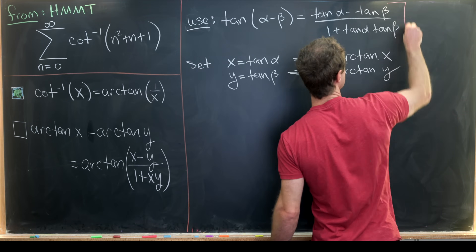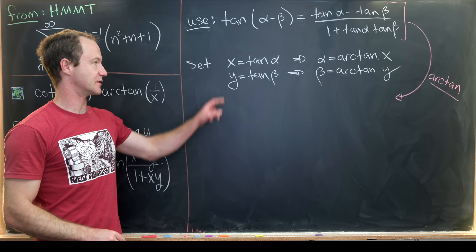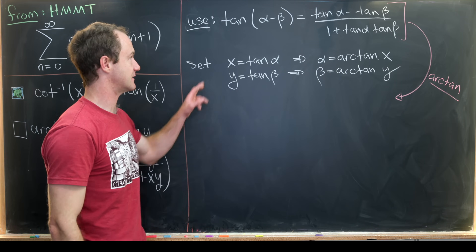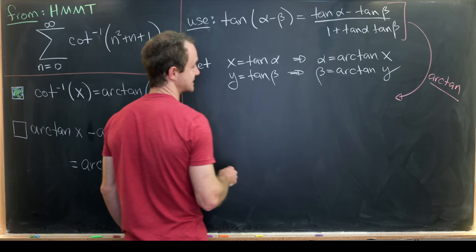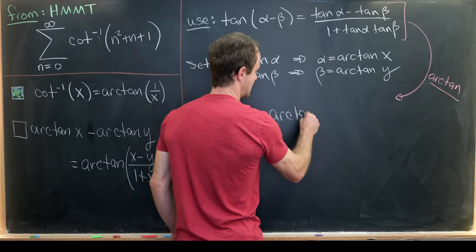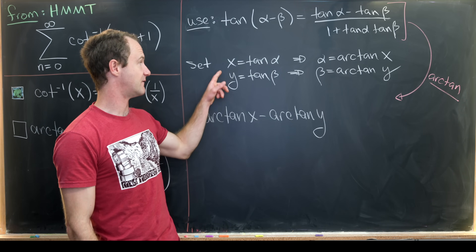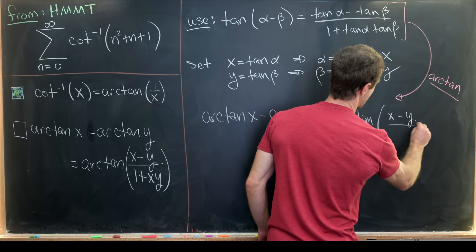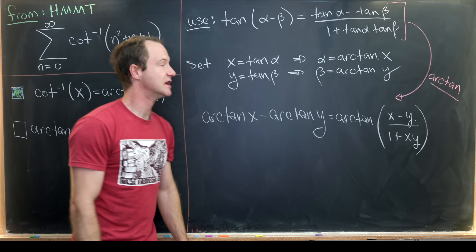From there, we apply the inverse tangent to both sides of the identity. On the left-hand side, we get alpha minus beta, which is arctan(x) minus arctan(y). On the right-hand side, substituting tan(alpha) = x and tan(beta) = y gives us arctan of (x minus y) over (1 plus xy). That completes the derivation.